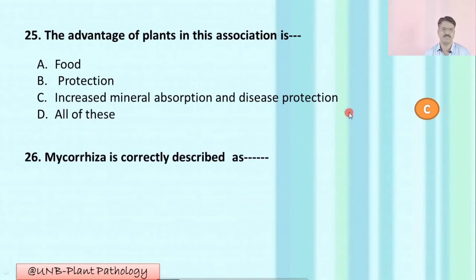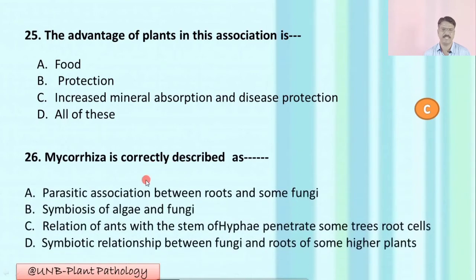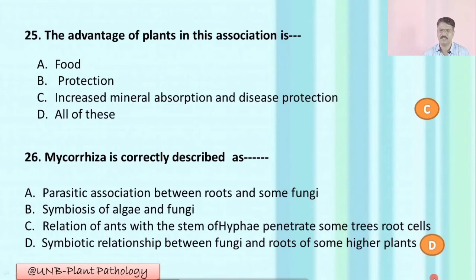Question number twenty-six: Mycorrhizae is correctly described as — A: parasitic association between roots and some fungi; B: symbiosis of algae and fungi; C: relation of ants with stem hyphae; D: symbiotic relationship between fungi and roots of some higher plants. The correct option is D: symbiotic relationship between fungi and roots of some higher plants.